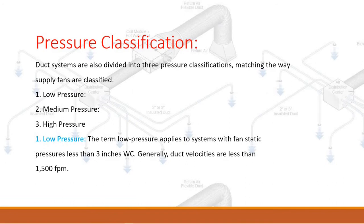Pressure classification. Duct systems are also divided into three pressure classifications matching the way supply fans are classified. One: low pressure, two: medium pressure, three: high pressure. Low pressure applies to systems with fan static pressures less than three inches WC, and generally duct velocities are less than 1500 FPM.